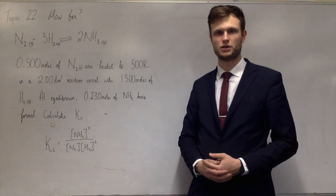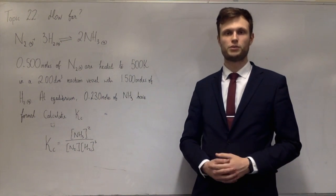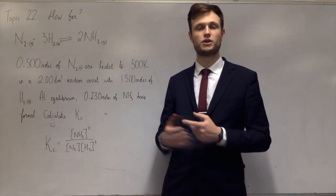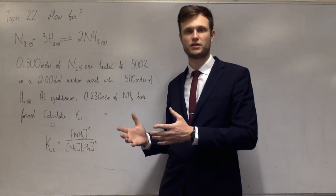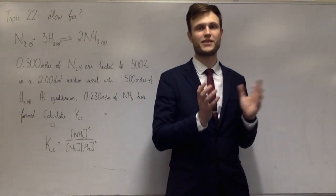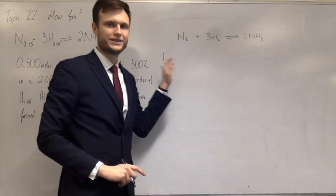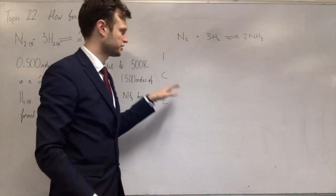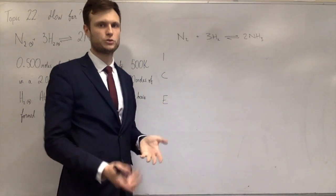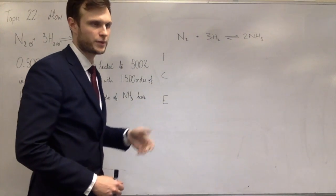It's essentially a stoichiometry question. A lot of people like to use the ICE method, where you write down the initial amount of everything, how much each one changes, and then the amounts at equilibrium. I stands for initial, C is change, and E is equilibrium.